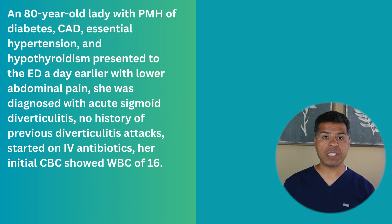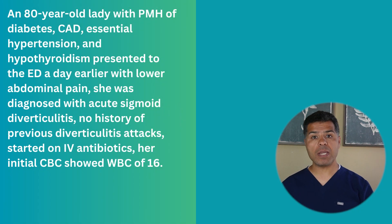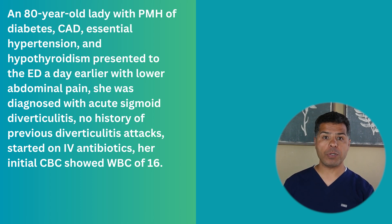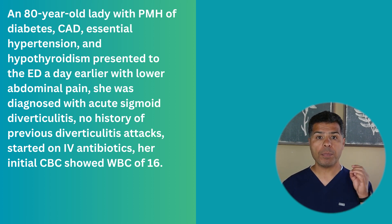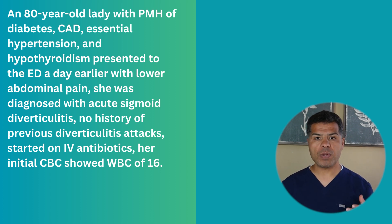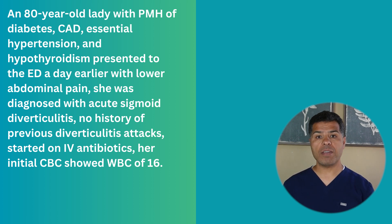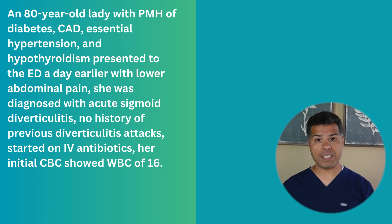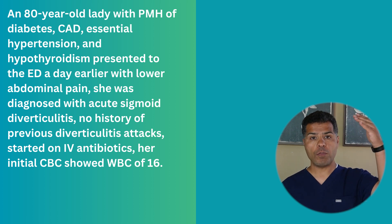An 80-year-old lady with a past medical history of diabetes, coronary artery disease, essential hypertension, and hypothyroidism presented to the ED a day earlier with lower abdominal pain. She was diagnosed with acute sigmoid diverticulitis with no history of previous diverticulitis attacks. She was started on IV antibiotics. Her initial CBC showed a WBC of 16.